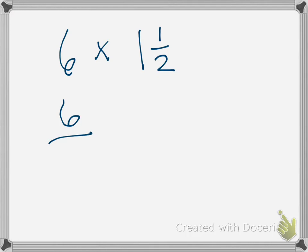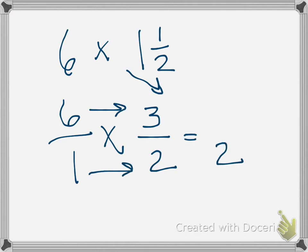I know I'm going to set six whole over one, multiplied by, okay, now I need to do my check mark method. So one times two is two plus one is three, so I'm going to get three over two. So I'm going to multiply now. One times two is two. Six times three is eighteen. So two goes into eighteen nine times. Nine hours.